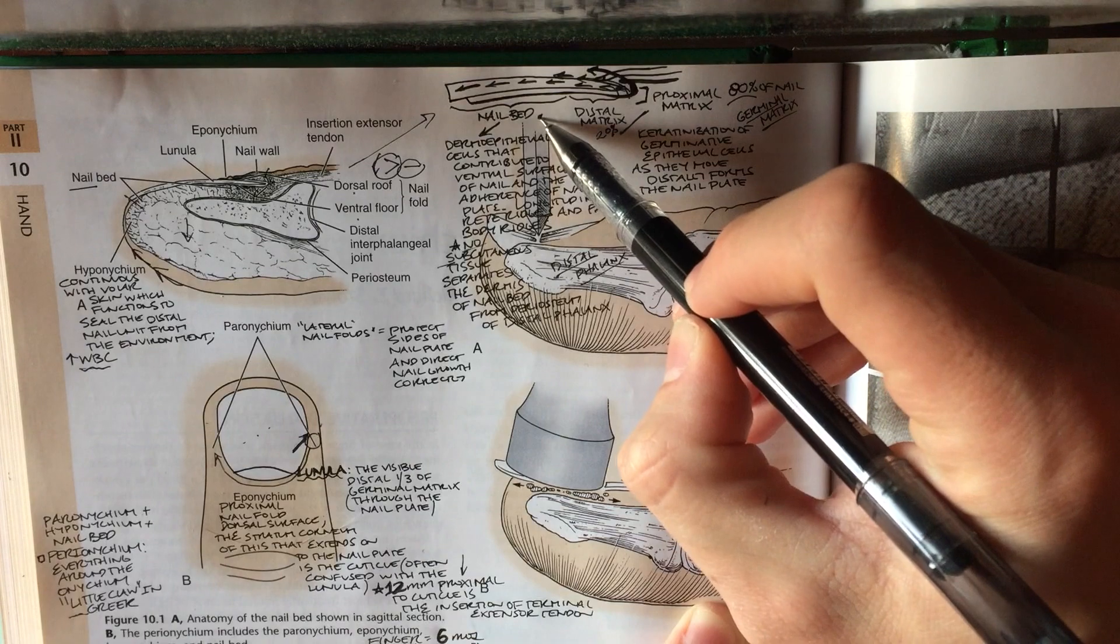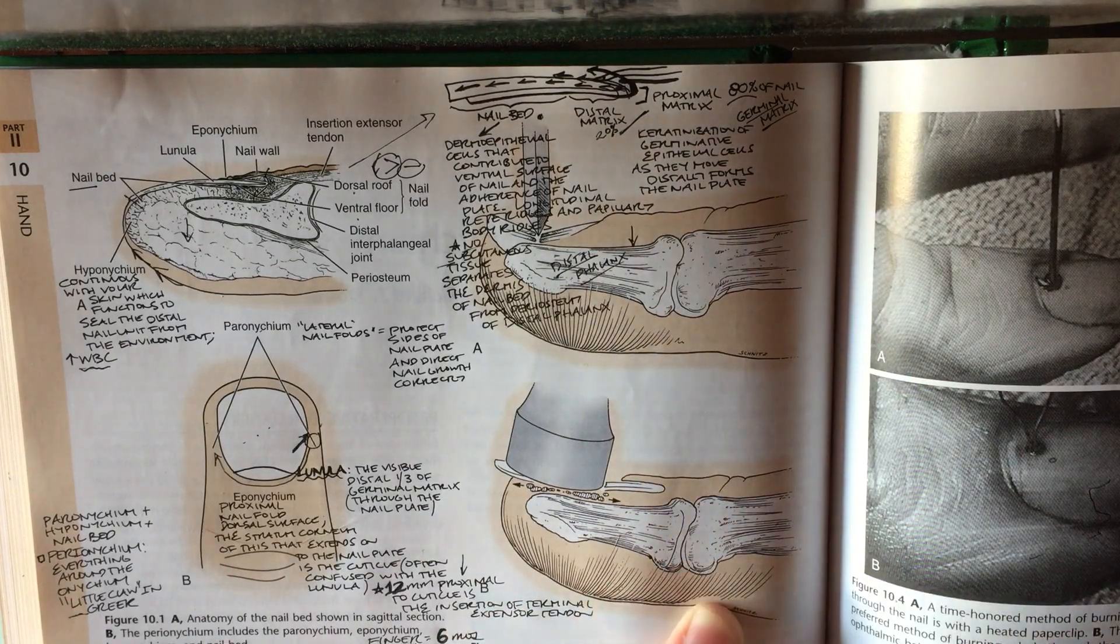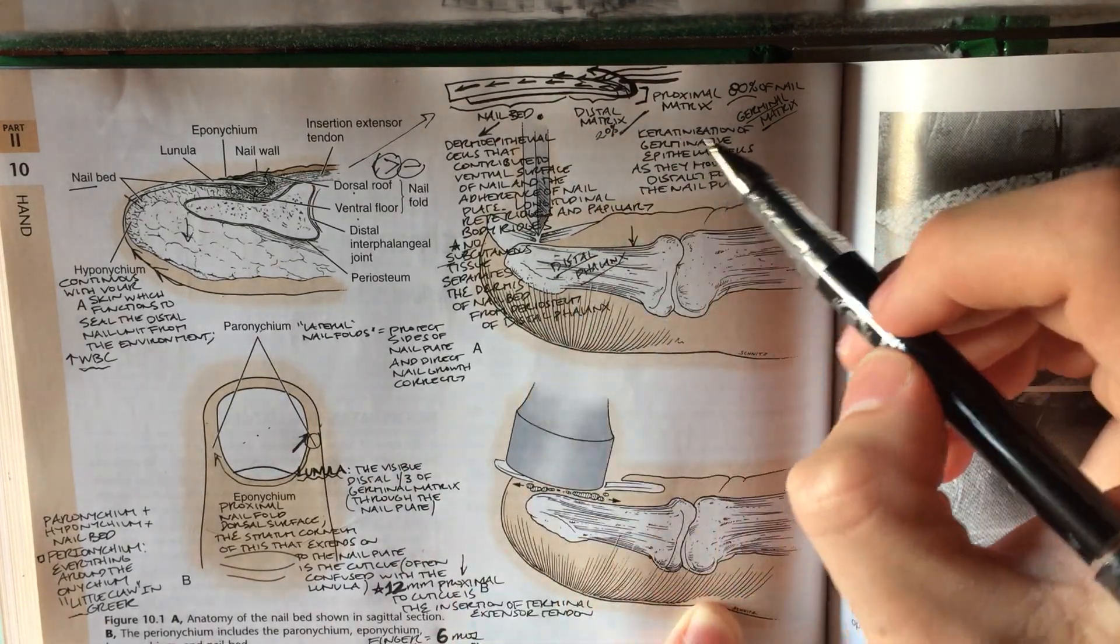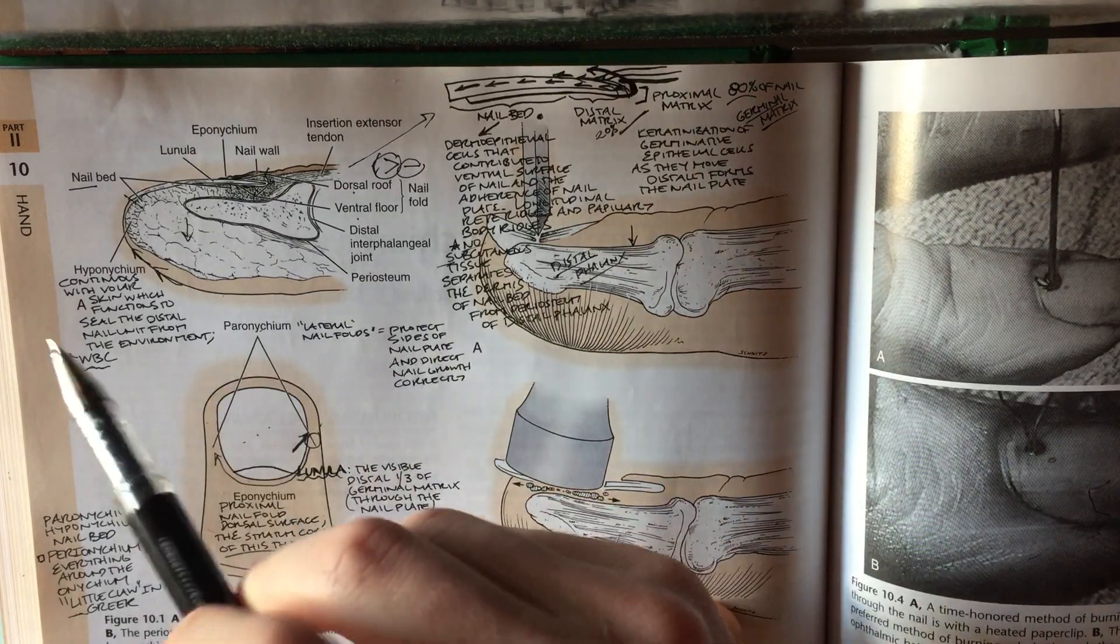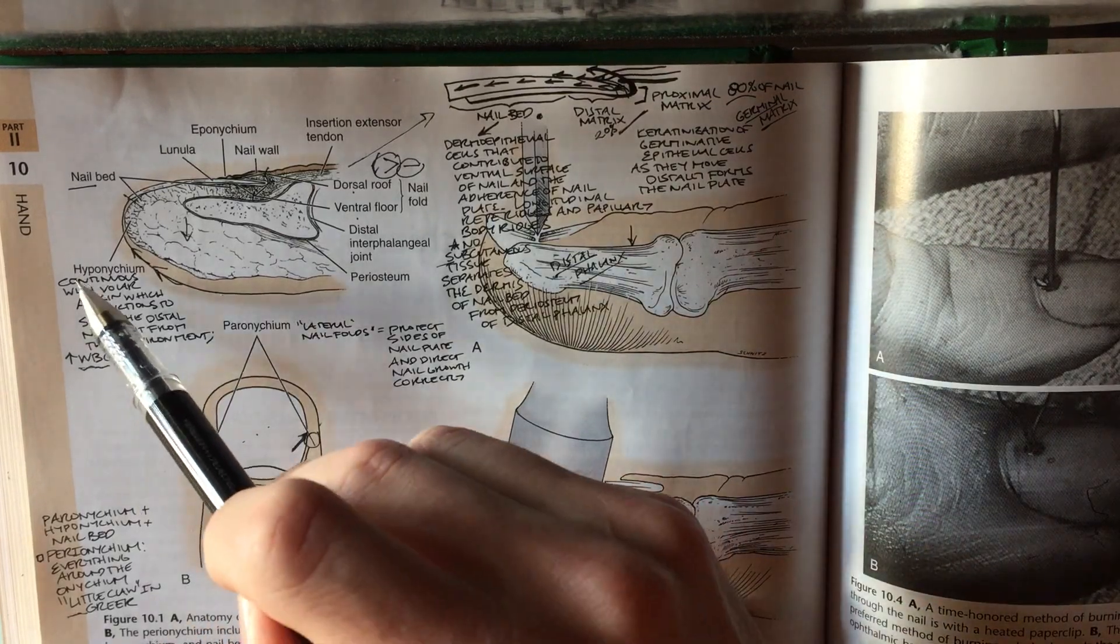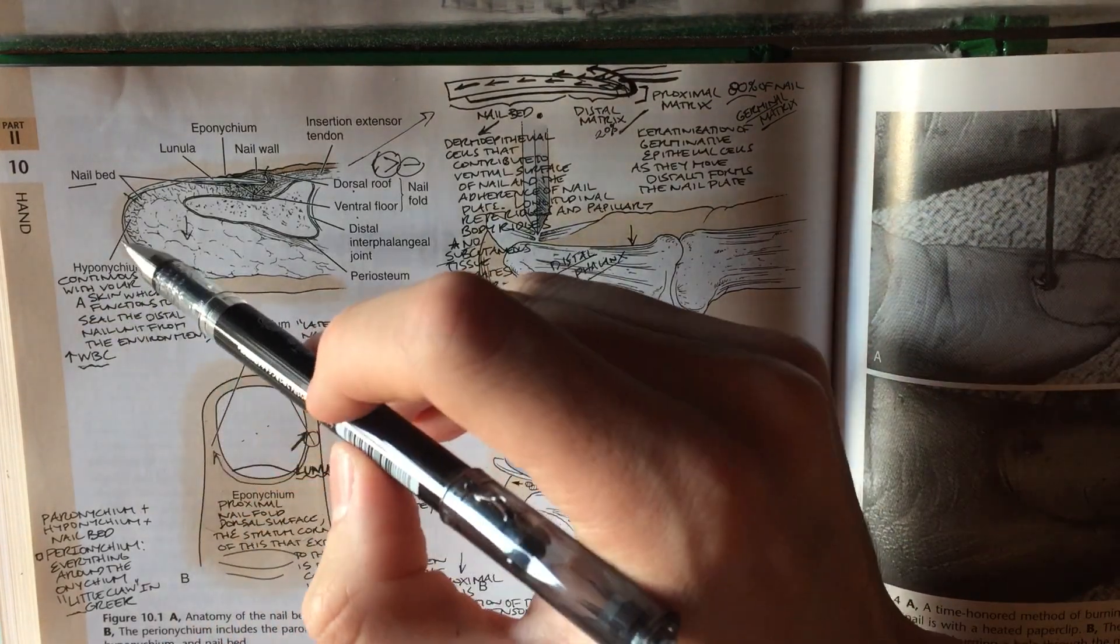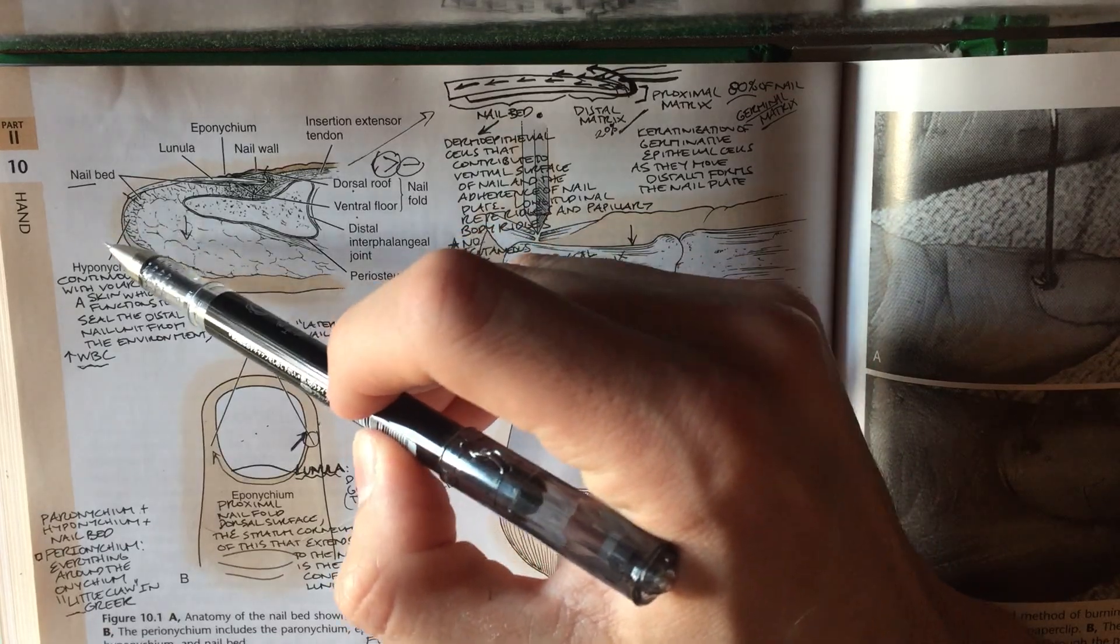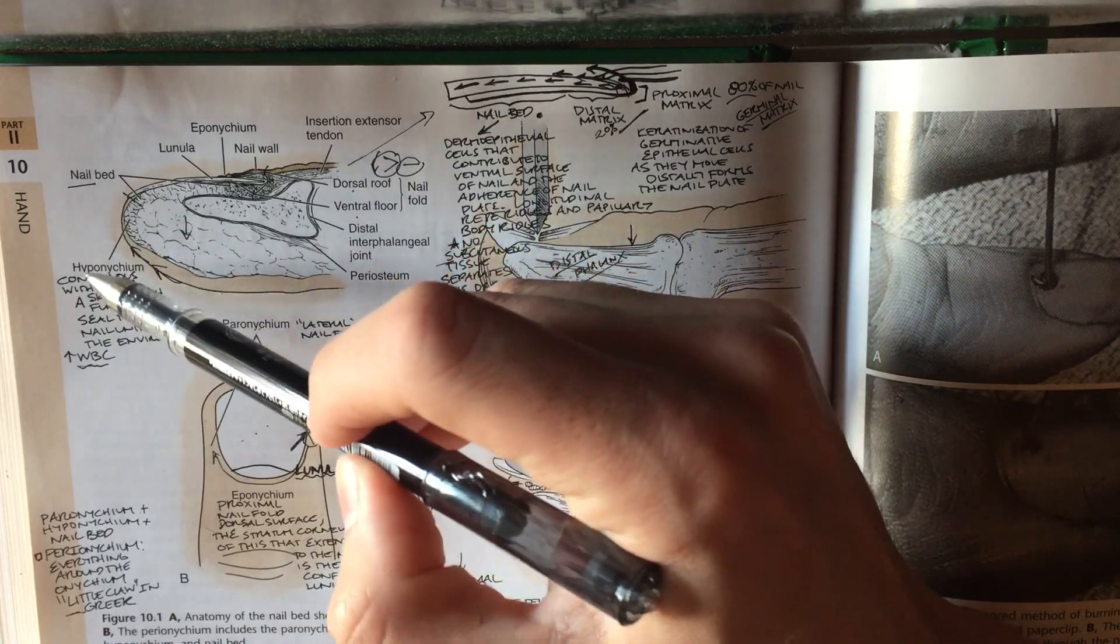Slightly distal to that is the nail bed, sometimes called the sterile matrix. It's called the sterile matrix because it's not the germinal matrix, but it's supposedly sterile because the hyponychium, which again, the hyponychium means the part below, or hypo,